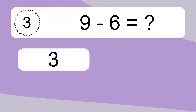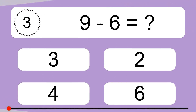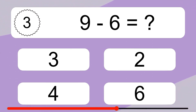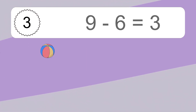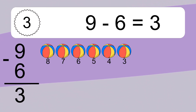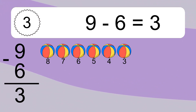9 minus 6 equals what? 9 minus 6 equals 3. Let's count it: 8, 7, 6, 5, 4, 3.